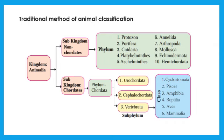All chordates are grouped in a single phylum that is chordata, which is further divided into three subphyla. Urochordata, Cephalochordata and Vertebrata.